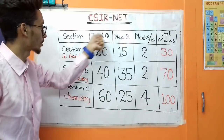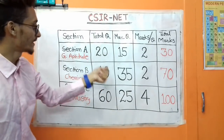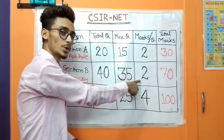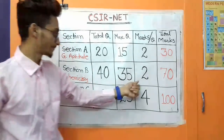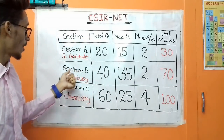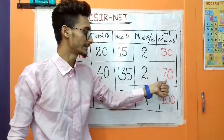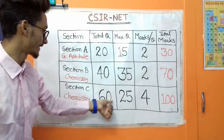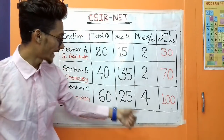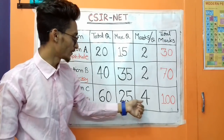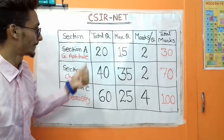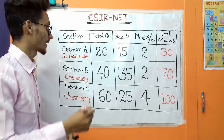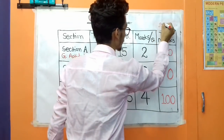Section B has a total of 40 questions, of which the maximum counted is 35 questions. Each correct question gives 2 marks, and the total marks you can achieve from Section B is 70. Section C has a total of 60 questions, of which the maximum is 25 questions. Each correct question gives 4 marks, and you can achieve a total of 100 marks from Section C. So the question paper comes with a total of 200 marks: 30 from A, 70 from B, and 100 from C.